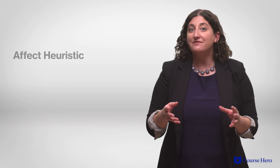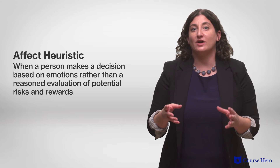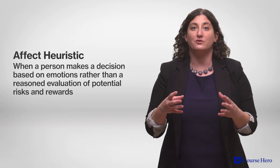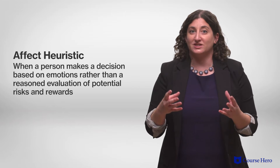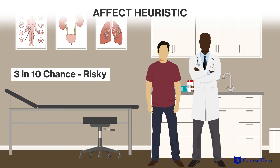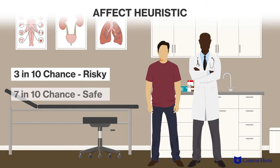The affect heuristic describes a situation where a person makes a decision based on emotions rather than a reasoned evaluation of potential risks and rewards. For example, a medical procedure described as having a 3 in 10 chance of leading to serious side effects feels risky, while one described as having a 7 in 10 chance of being side effect free feels safe. The actual odds of side effects are identical, but the first presentation triggers fear, making people less likely to choose the treatment.